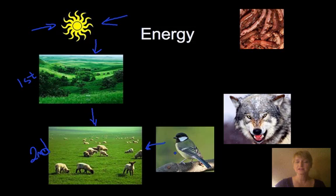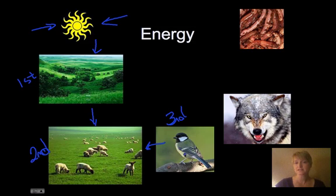Birds also eat the insects that are eating the plants, so these would be our third level organisms. They might eat some of the plants, but they are also eating the insects, and so they are on the third level because they're carnivorous.